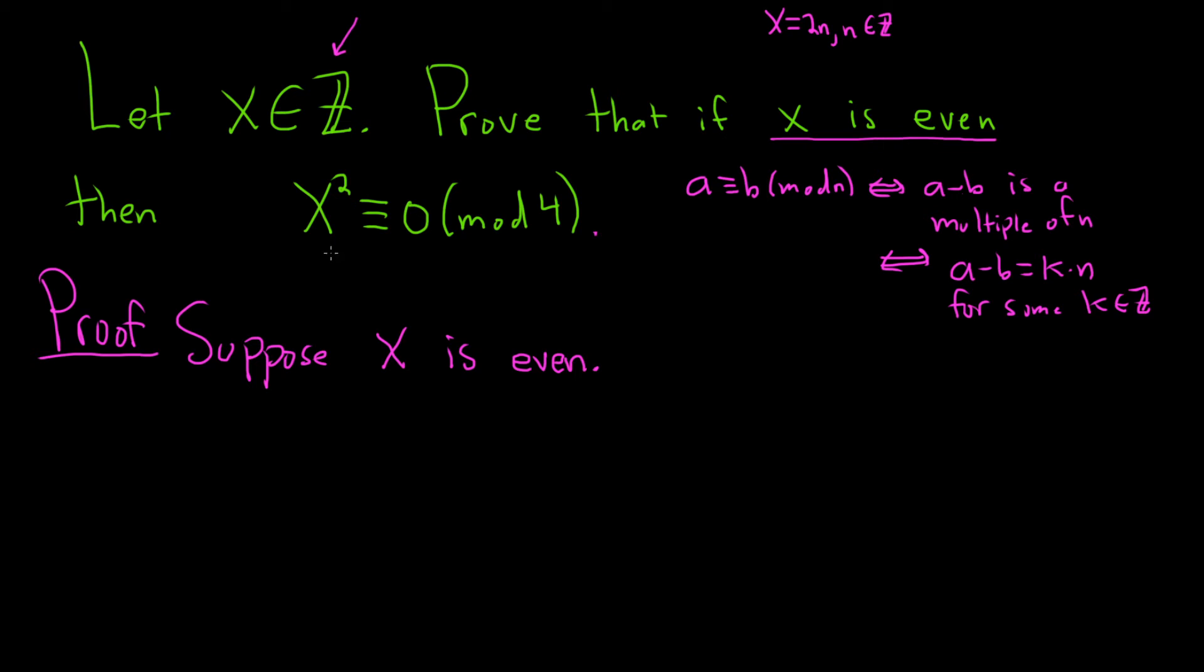And now we have to show that x squared is congruent to 0 modulo 4. Before we do that, we should probably use the fact that x is even. So what does that mean? This means that x equals 2 times n for some integer n.